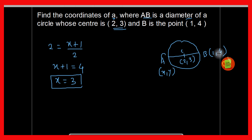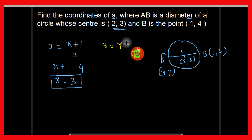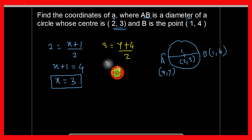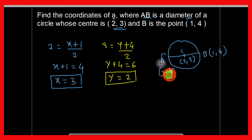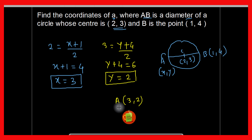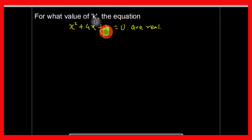For the y-coordinate, 3 equals y plus 4 upon 2, so y plus 4 equals 6, giving y equals 2. Therefore the coordinates of A are 3 and 2.